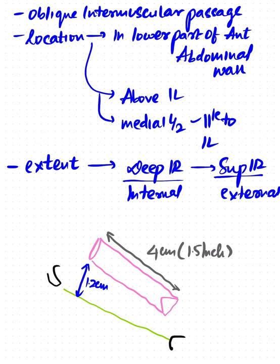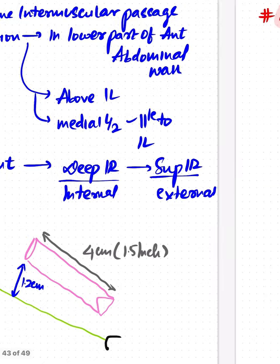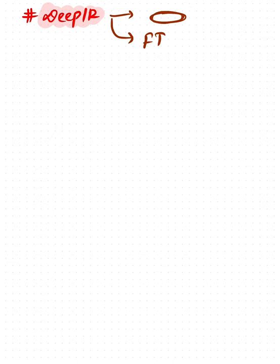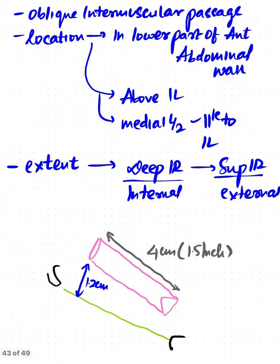The second side heading is inguinal rings. The deep inguinal ring is an oval-shaped opening present in the fascia transversalis, situated 1.2 centimeters above the mid-inguinal point.